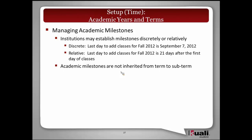We've identified that academic milestones are created in two different ways, and we want to allow the ability to do either. One is a discrete day — for example, the last day to add classes is September 7th. But there may be other milestone dates generated based on another date, such as the last day to add classes being 21 days after the first day of classes, and the system will be able to know that. Academic milestones are not inherited from term to subterms — and that's where we are right now.